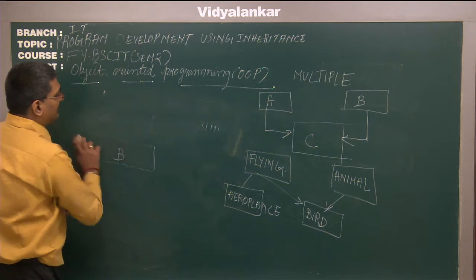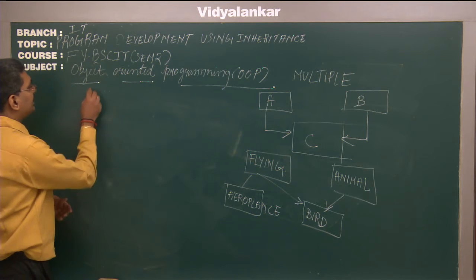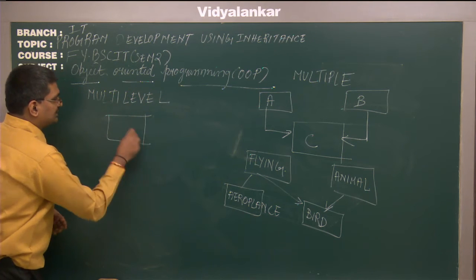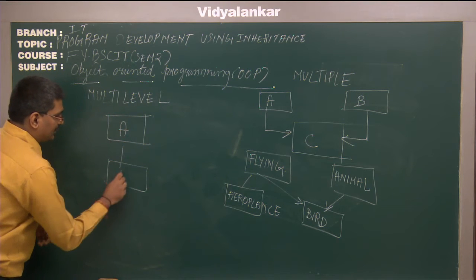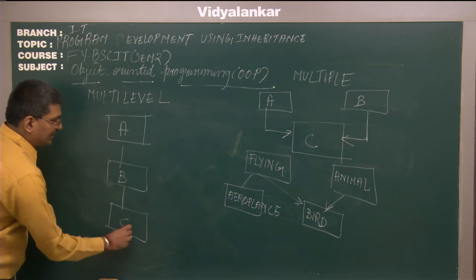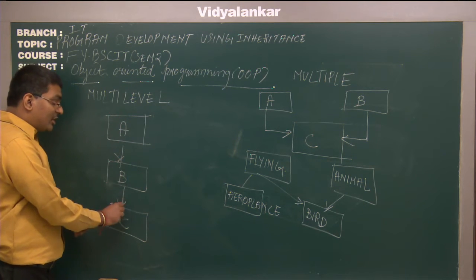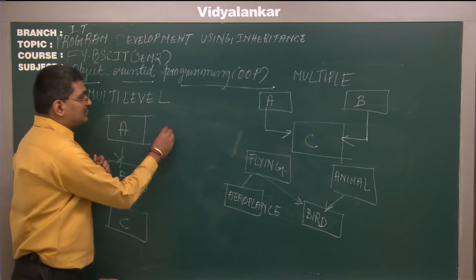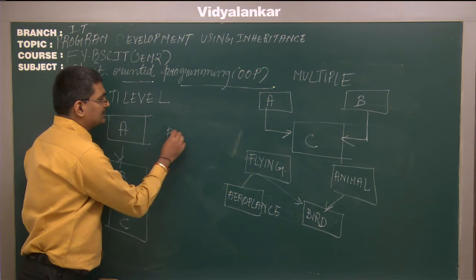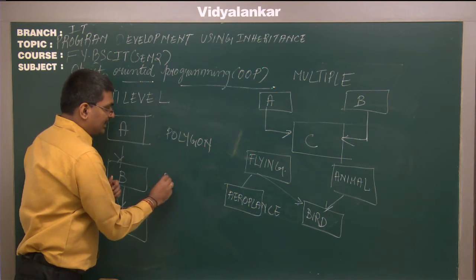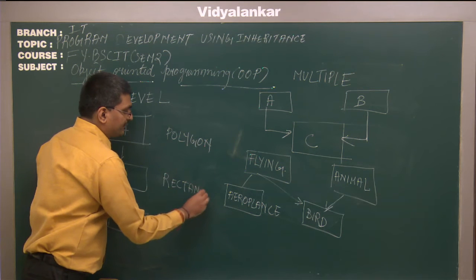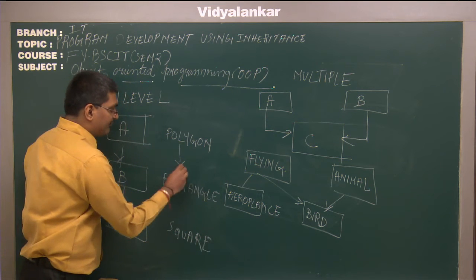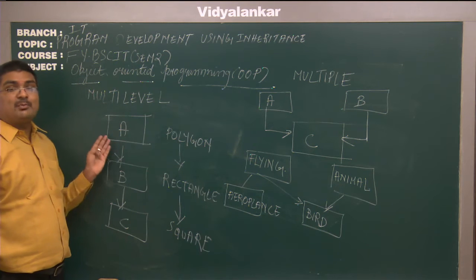The third type is multi-level inheritance, where we have more than one level. Class A is the base, class B inherits from A, and class C inherits from B. We already saw this with shapes: polygon is the base, rectangle extends from polygon, and square extends from rectangle — each extending from one another to form multi-level inheritance.